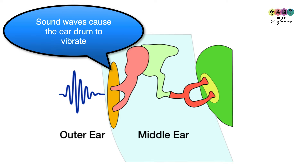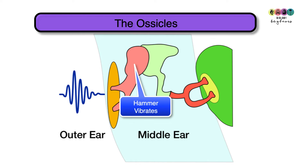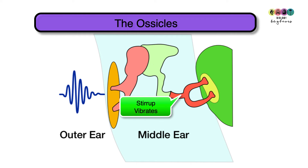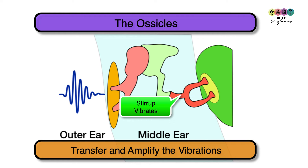When the eardrum vibrates, the vibrations are passed into the middle ear. This is because the hammer — the first ossicle — is attached to the back of the eardrum. The hammer starts to vibrate, then the anvil vibrates because it's attached to the hammer, and then the stirrup vibrates because it's attached to the anvil. This is how the ossicles transfer and amplify those vibrations into the cochlea.